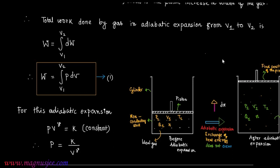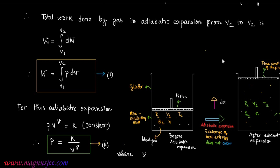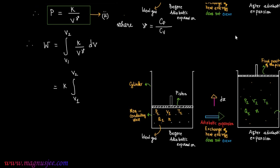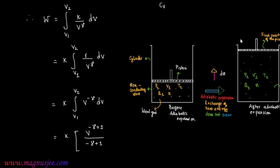Pressure P = K / Vγ, where γ = Cp/Cv is the ratio of molar specific heats of the ideal gas at constant pressure and volume. Therefore W = ∫(V1 to V2) (K/Vγ) dV = K ∫(V1 to V2) V^(−γ) dV = K [V^(−γ+1) / (−γ+1)] from V1 to V2.